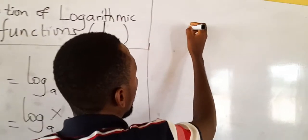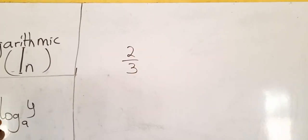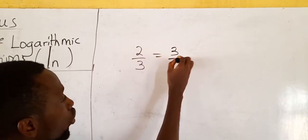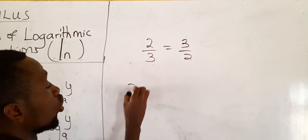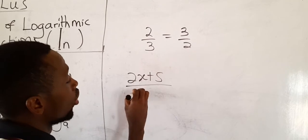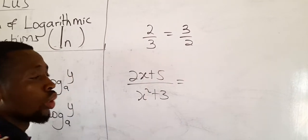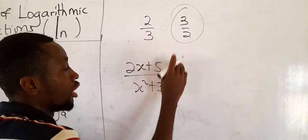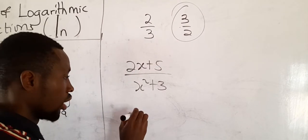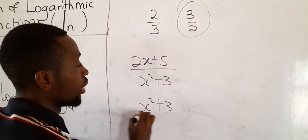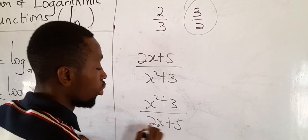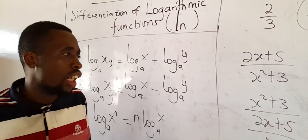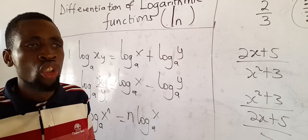Another thing to note: if I have 2/3 and I ask you to reciprocate it, 2/3 simply becomes 3/2 — that's the reciprocal. Now if I have (2x + 5)/(x² + 3) and I ask you to reciprocate this, it will be (x² + 3)/(2x + 5) — the denominator becomes the numerator and the numerator becomes the denominator.